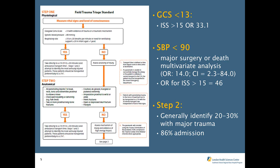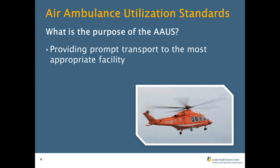What is the purpose of the Air Ambulance Utilization Standard, and how does it fit with the Field Trauma Triage Standard? The air ambulance utilization standard is trying to provide prompt transport to the most appropriate facility — essentially it's a time factor. We're lucky in Ontario to have a robust air ambulance program for specific indications. It's a limited resource and we have to use it appropriately, which is why releasing a joint statement with the Field Trauma Triage Standard makes a lot of sense.